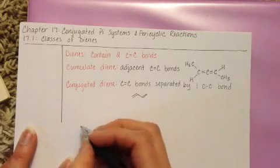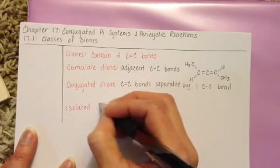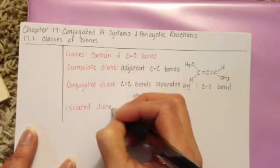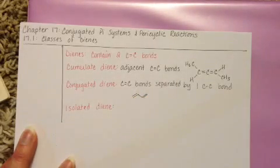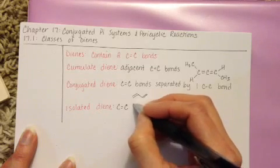The third type is an isolated diene. In an isolated diene, the double bonds are separated by more than one single bond.